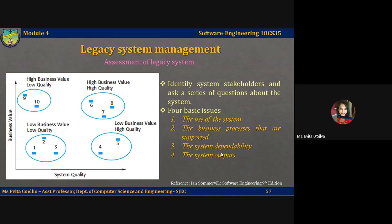The last question is the system output. The key issue here is the importance of the system outputs to the successful functioning of the business. If the business depends on the outputs, then the system has high business value. Inversely, if the outputs can be easily generated in some other way, then the business value may be low.